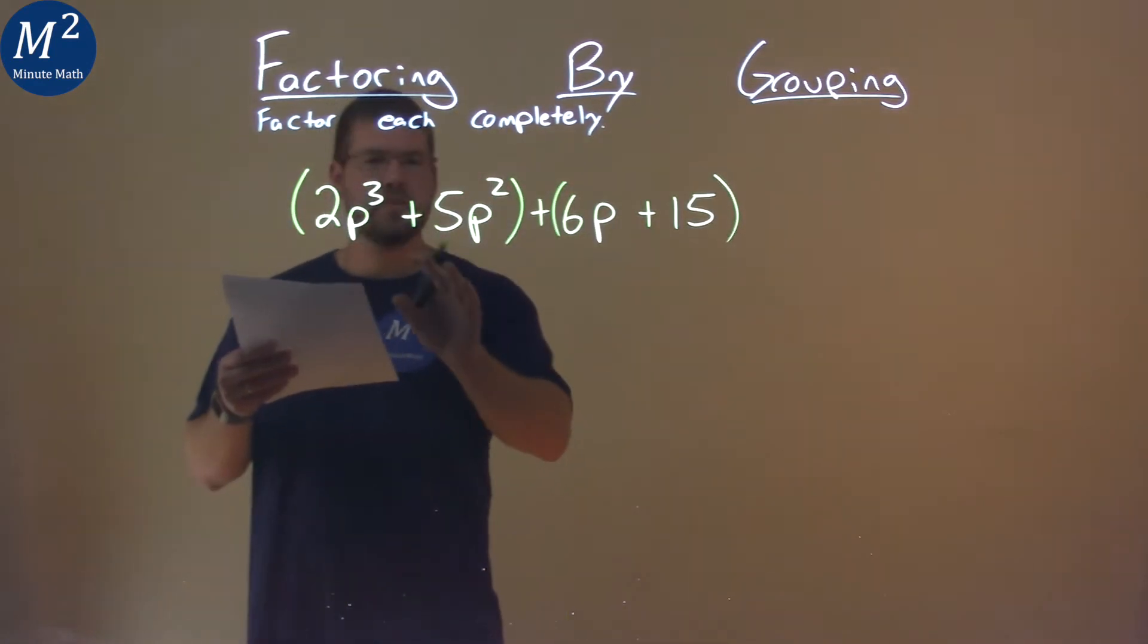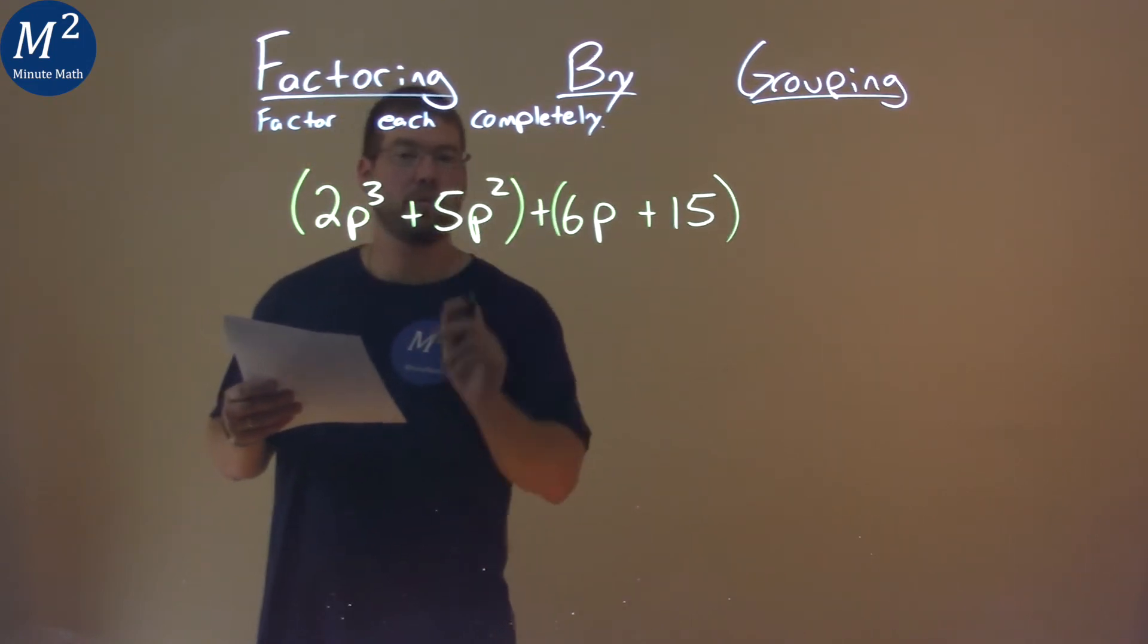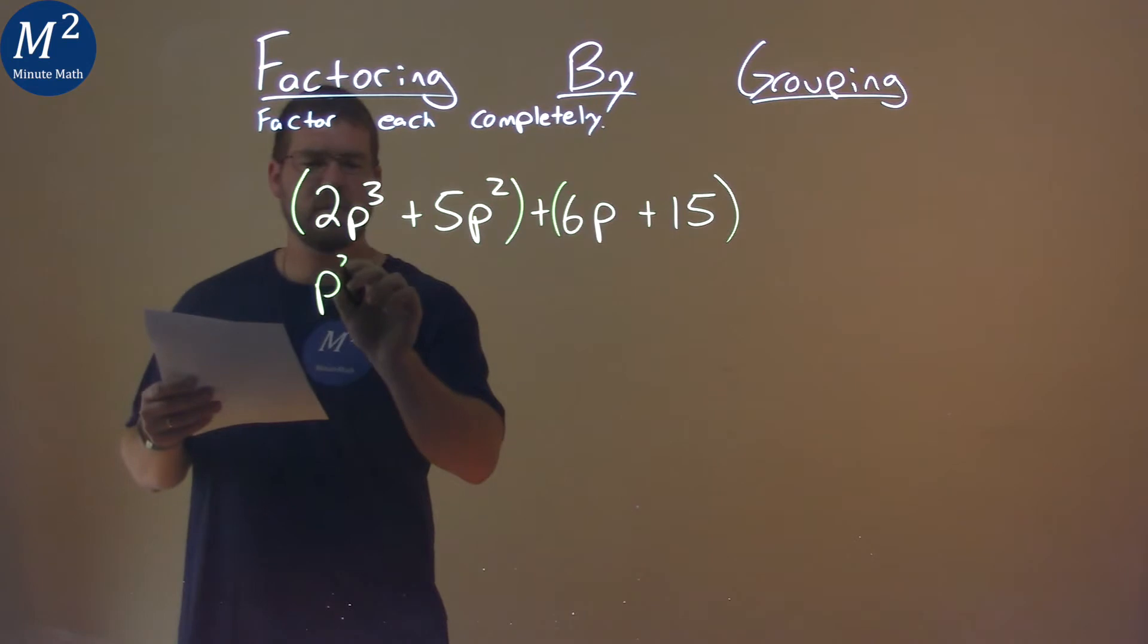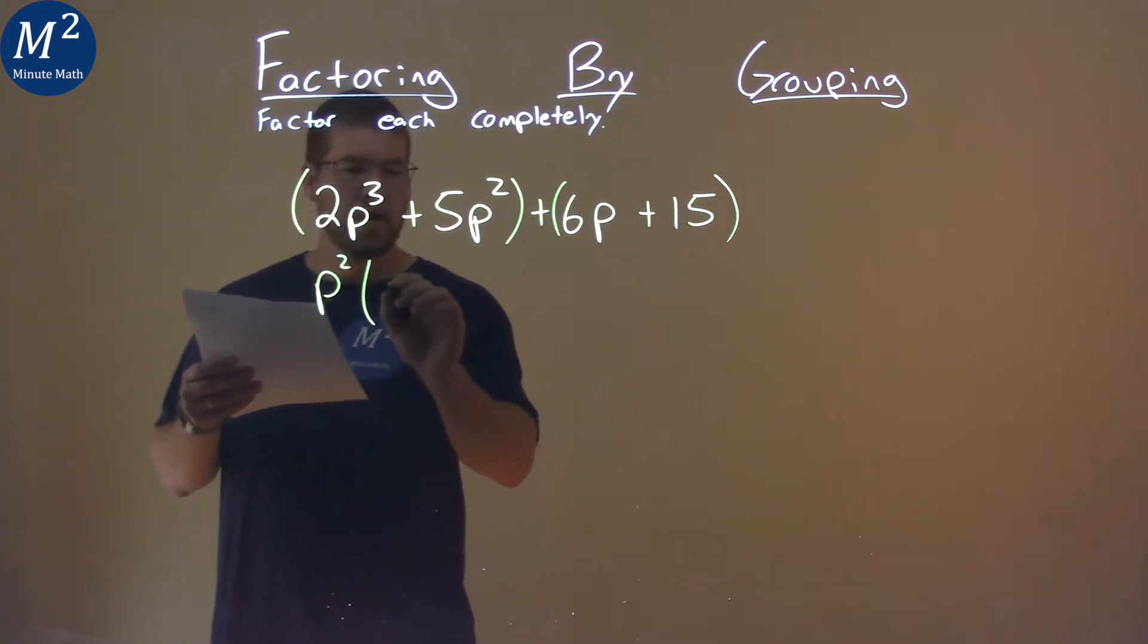So, now we're going to pull out a common factor from each one. I see in the first group, a p squared is in both parts. So, I pull out a p squared, and what am I left with? I'm left with a 2p plus 5.